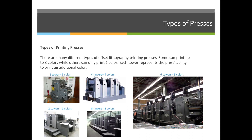If we print on the back of the sheet — if the sheet comes off the end of the press, we flip it over, and put it back in — then it would be two impressions. So your only options for press impressions are either one pass on press or two passes on press.